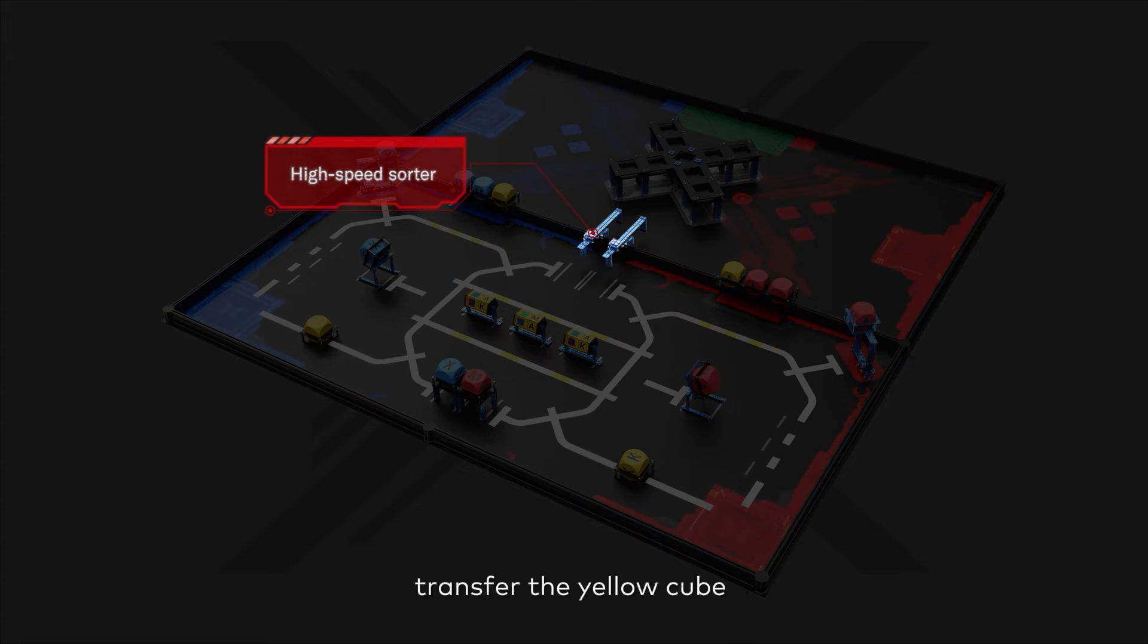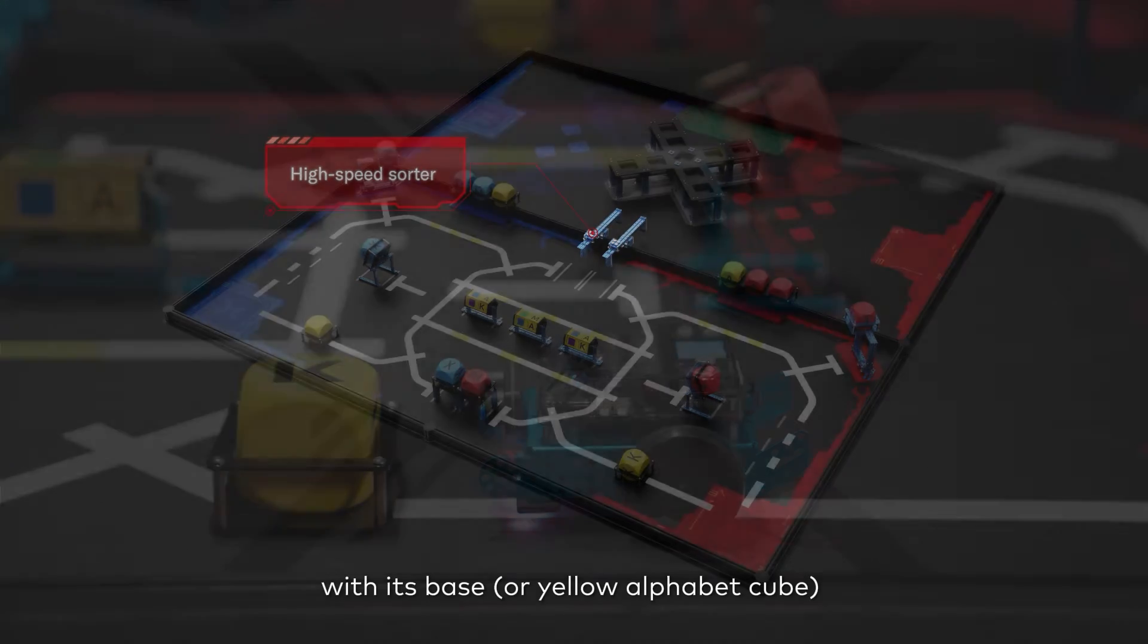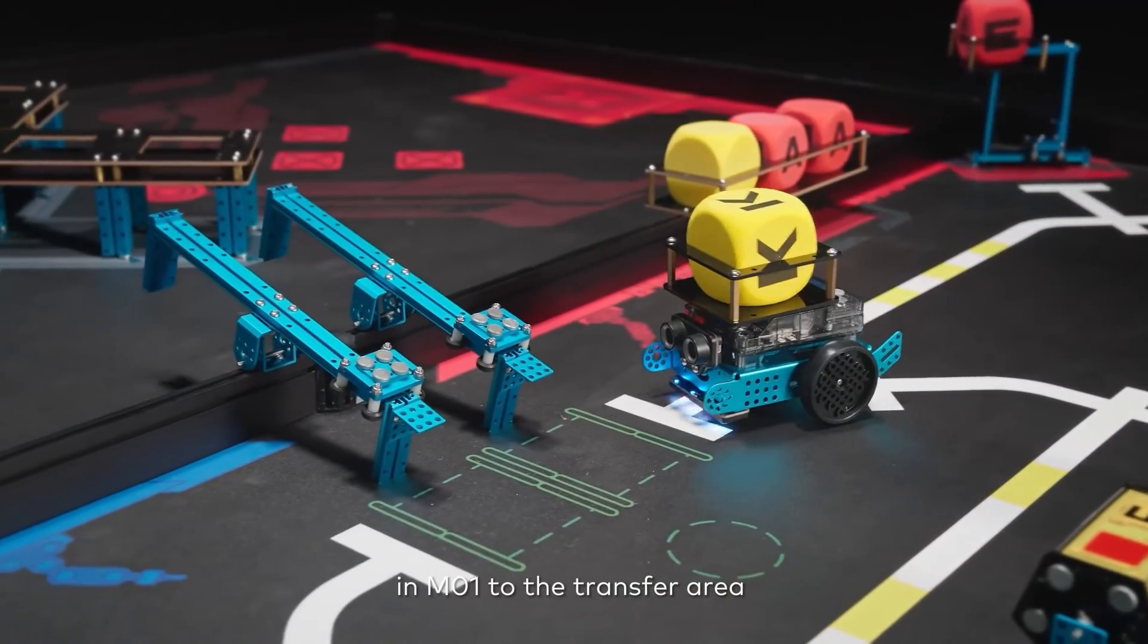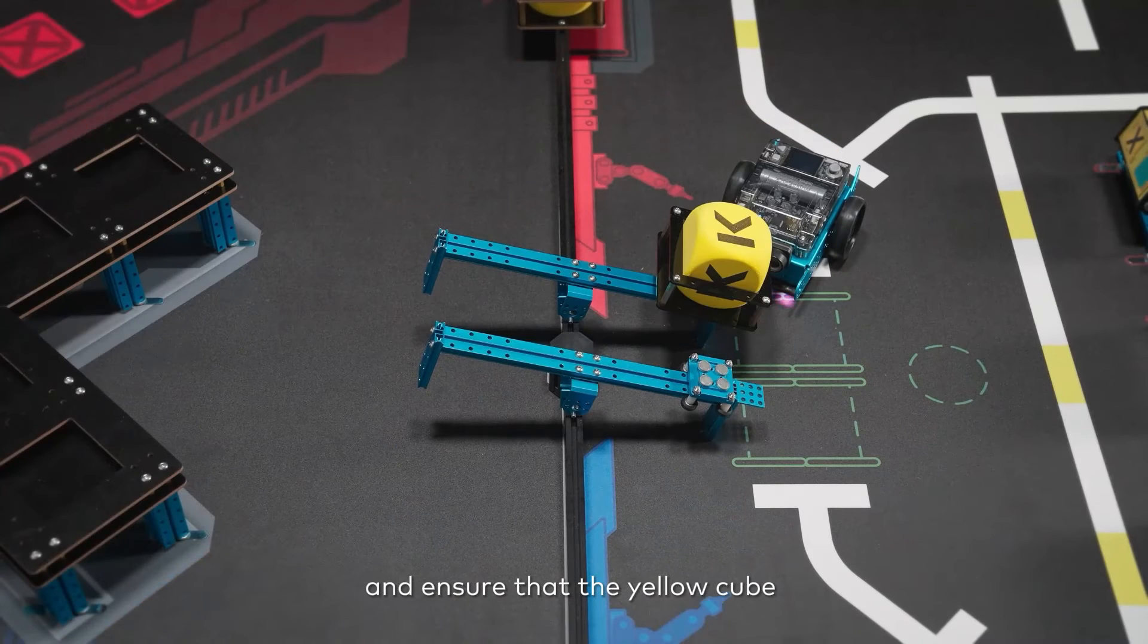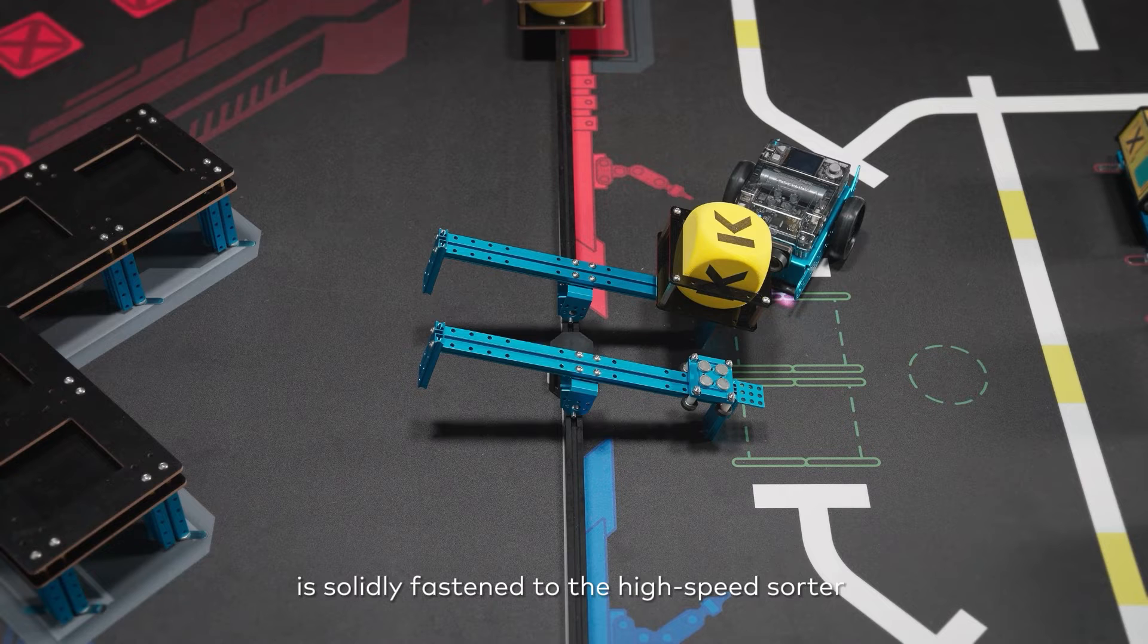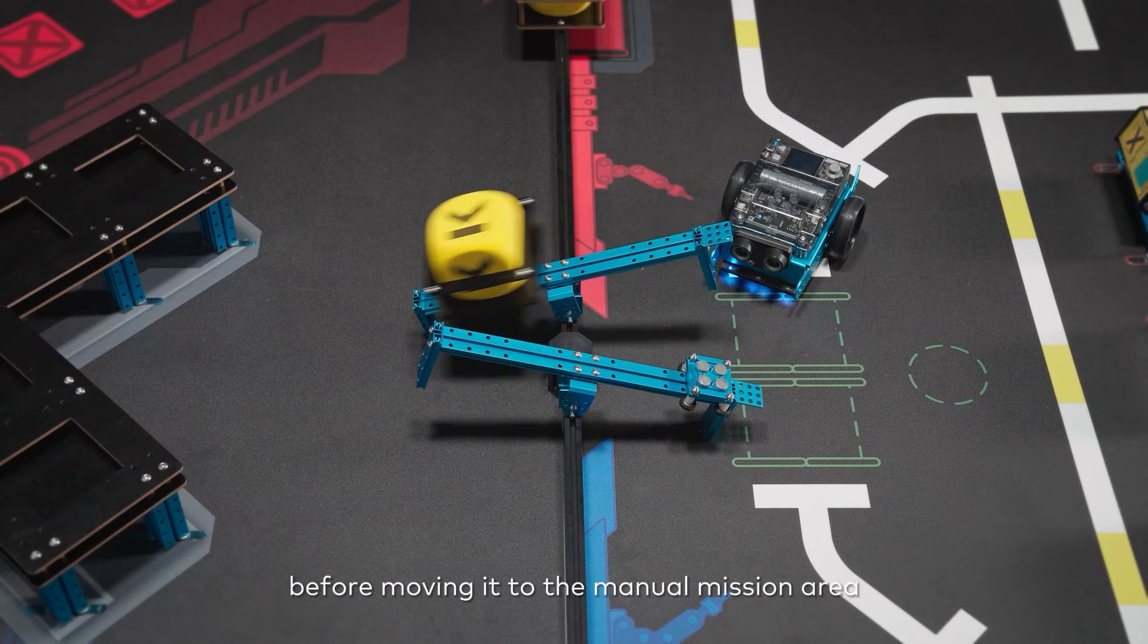In the cube transfer area, transfer the yellow cube with its base or yellow alphabet cube in M01 to the transfer area, and ensure that the yellow cube with its base or yellow alphabet cube is solidly fastened to the high-speed sorter before moving it to the manual mission area.